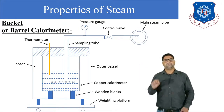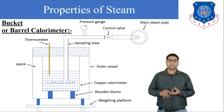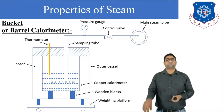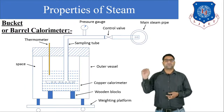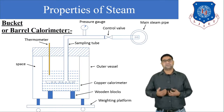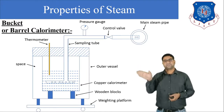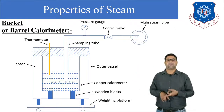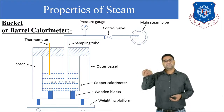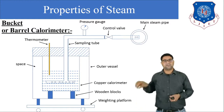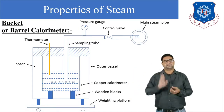The third component is the pressure gauge. With the pressure gauge we can measure the pressure of the steam entering the barrel calorimeter. The fourth component is the sampling tube — the vertical tube present inside the barrel calorimeter. From the sampling tube we provide steam to the barrel calorimeter, and this sampling tube is directly connected with the main steam pipe.